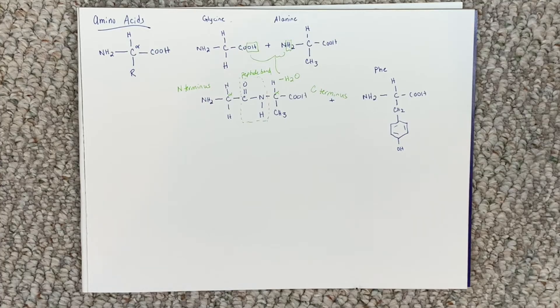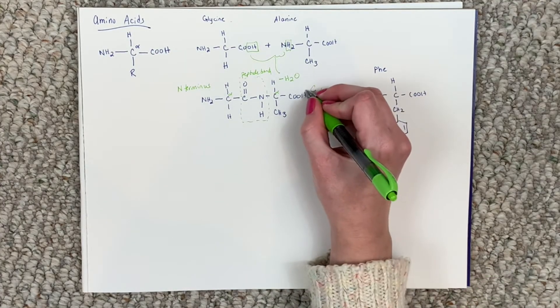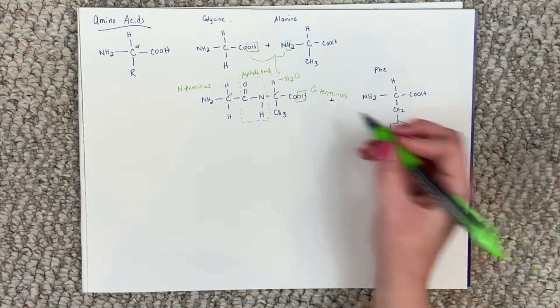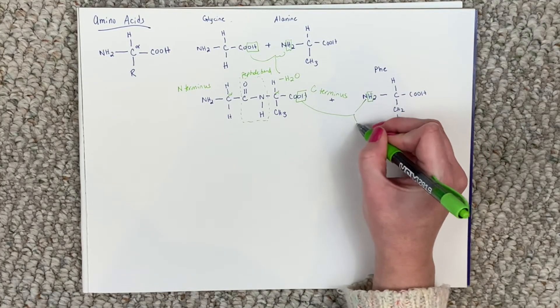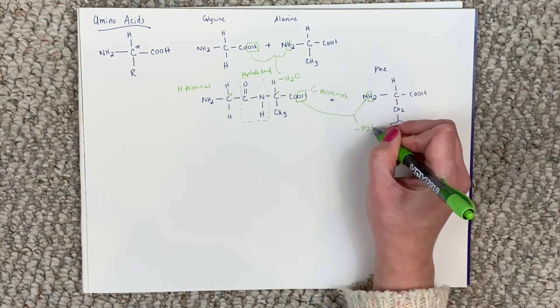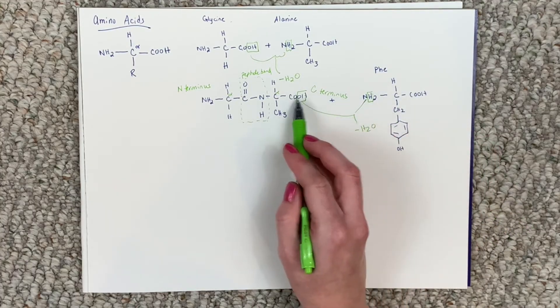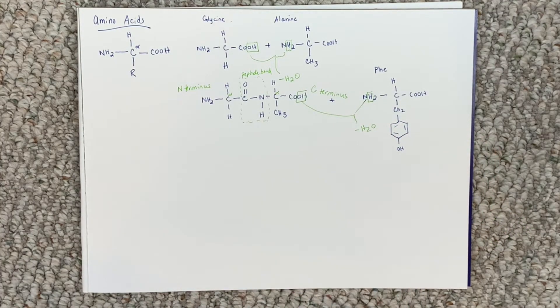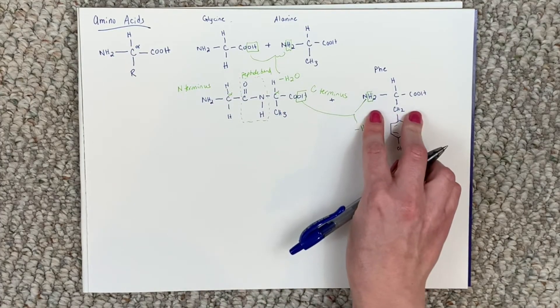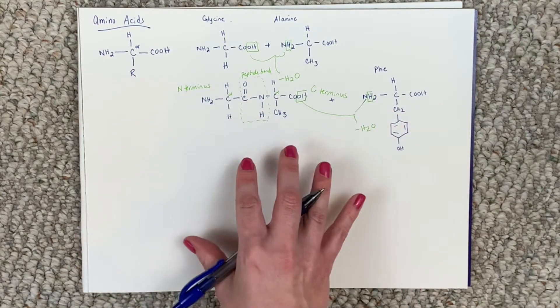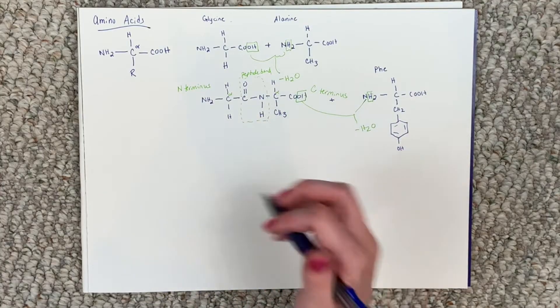So all that changes between each of these amino acids is that R group. Now remember to form a peptide bond. This OH will combine with one of these hydrogens, which means we lose a molecule of water, but now a peptide bond forms between these two amino acids. So let's draw all these three amino acids attached. So this is how we make a protein. We keep adding more and more amino acids.